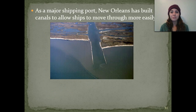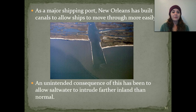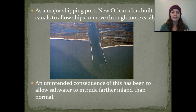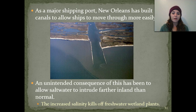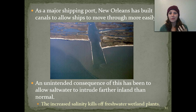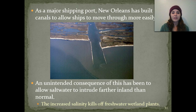As a major shipping port, New Orleans has built canals to allow ships to move through their area more easily. An unintentional consequence of building these canals has been that it's allowed saltwater to intrude further and further inland than normal. Having all of that saltwater kills off a lot of those freshwater wetland plants — that's one of the downfalls of human impact on aquatic ecosystems.